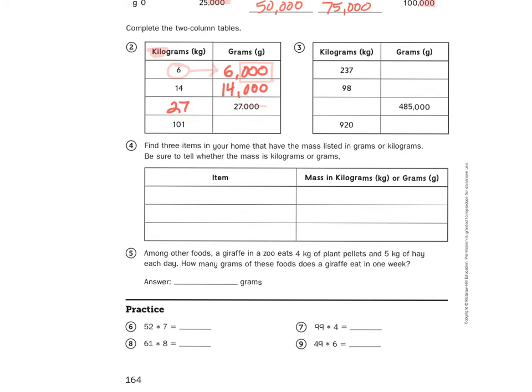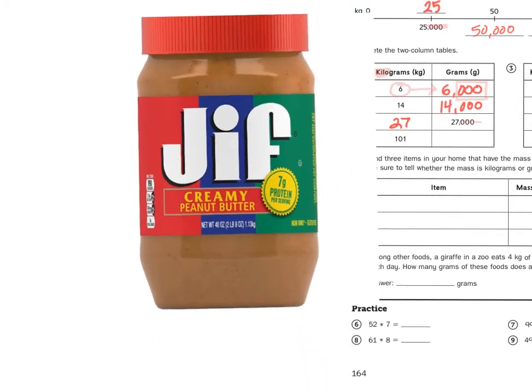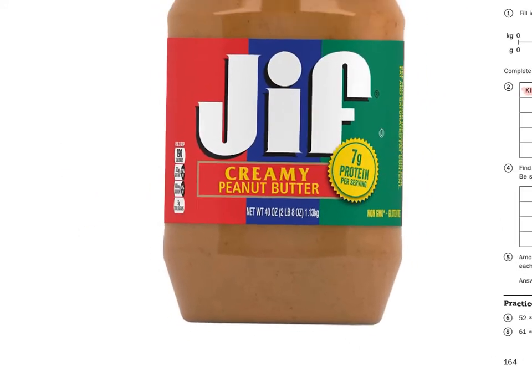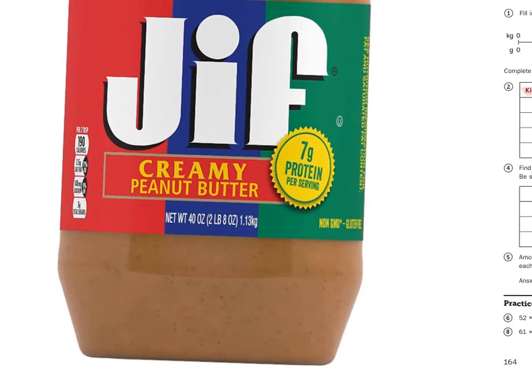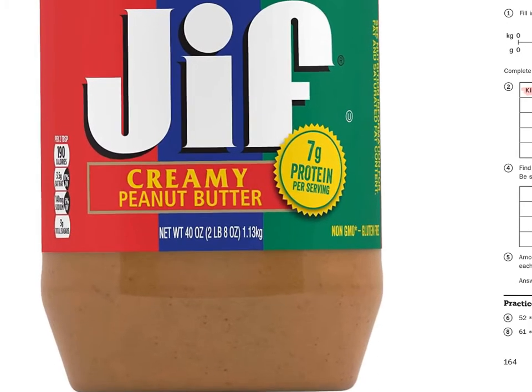So, for problem number 4, we're going to need a little visual accompaniment in the form of a picture. And this picture happens to be one of my favorite foods, and that is peanut butter. Let me put it off to the side here. Now, if I look at this peanut butter jar, as you can see, along with the calories and the amount of protein that peanut butter offers you, it gives you the weight of the package. And as you can see, the package is 40 ounces, or 2 pounds, 8 ounces.